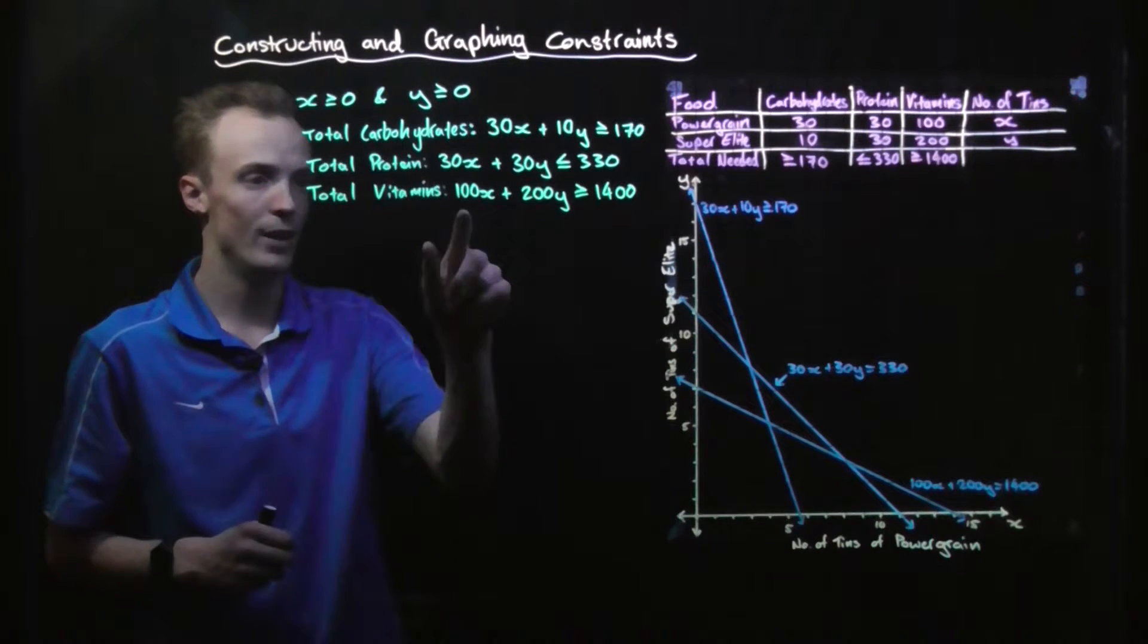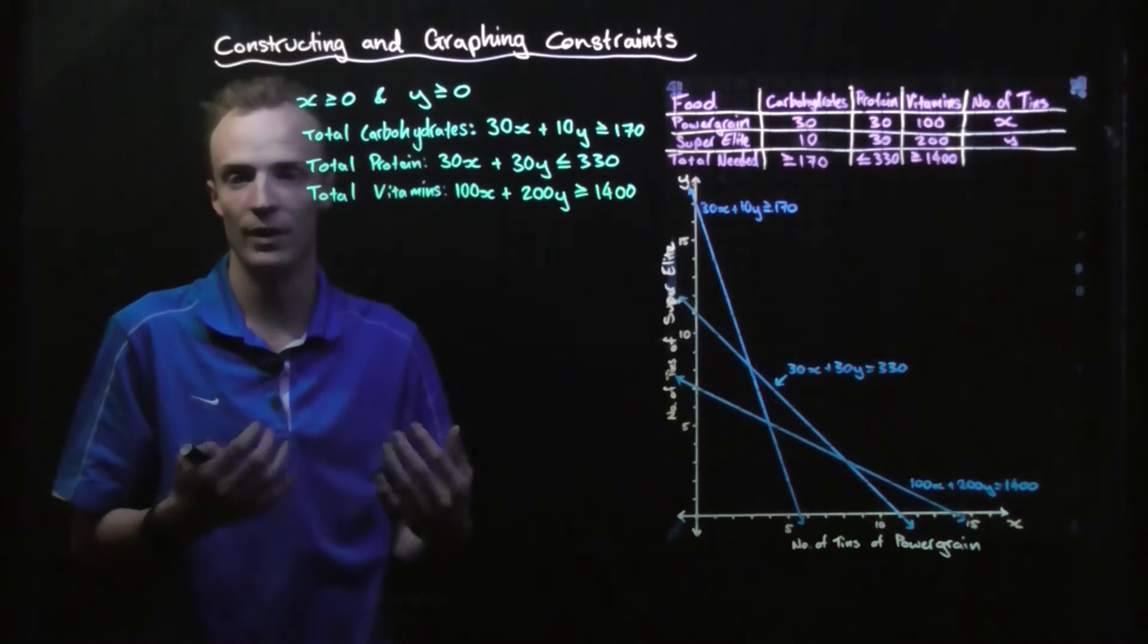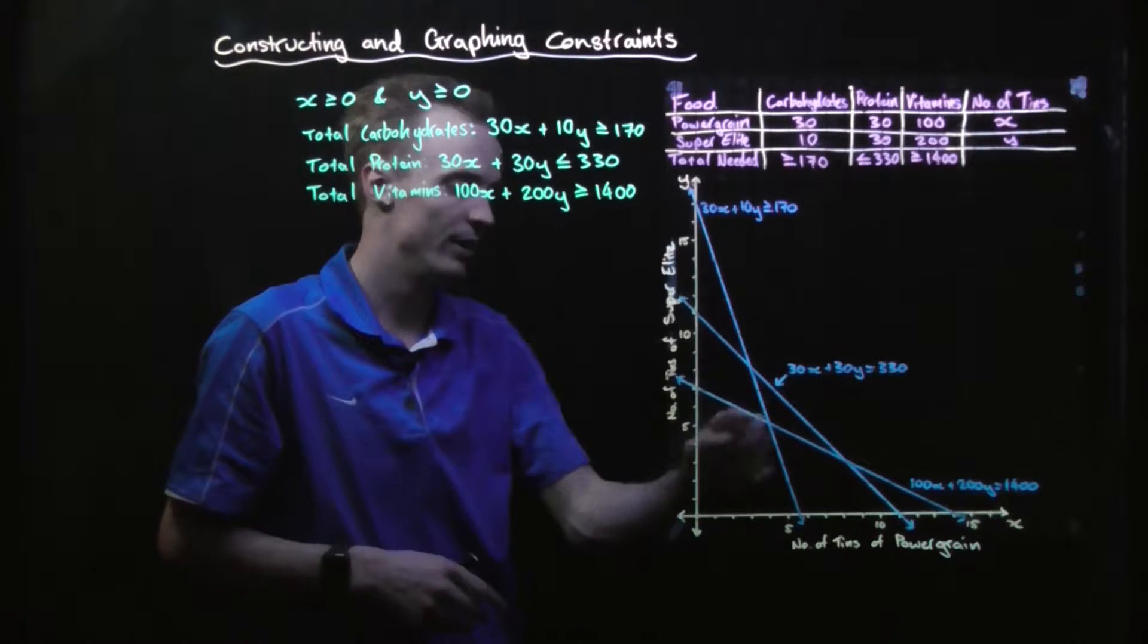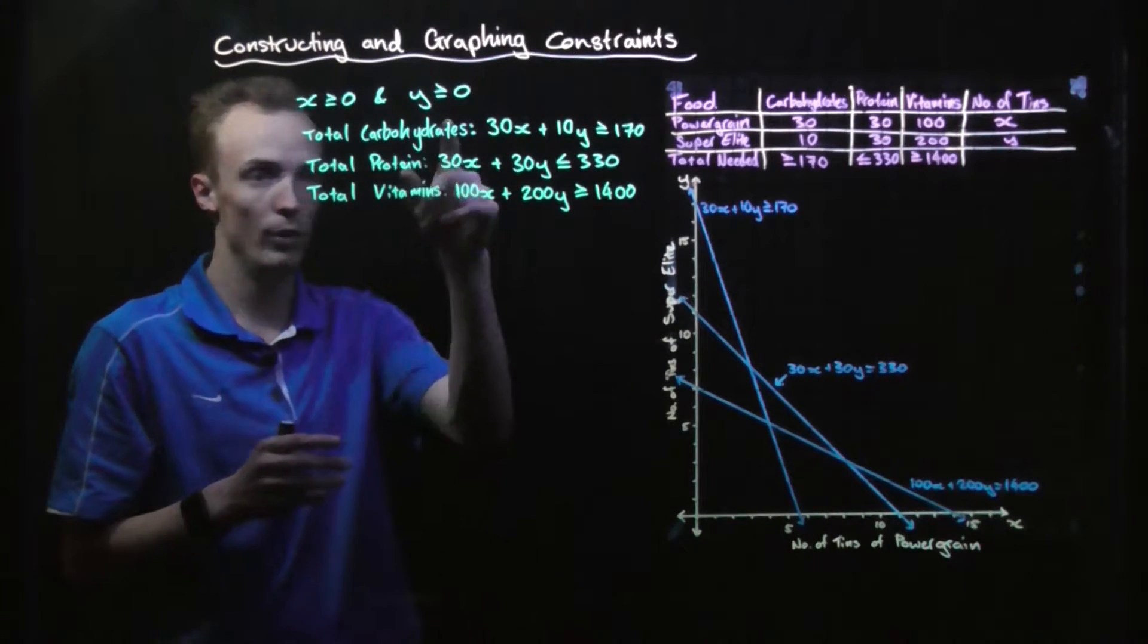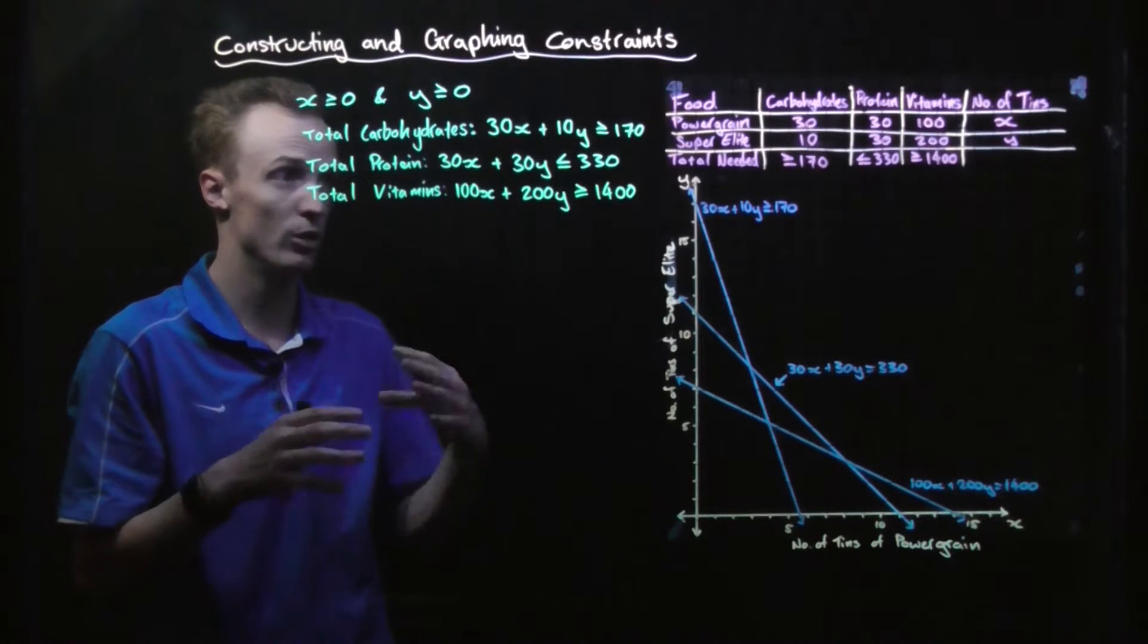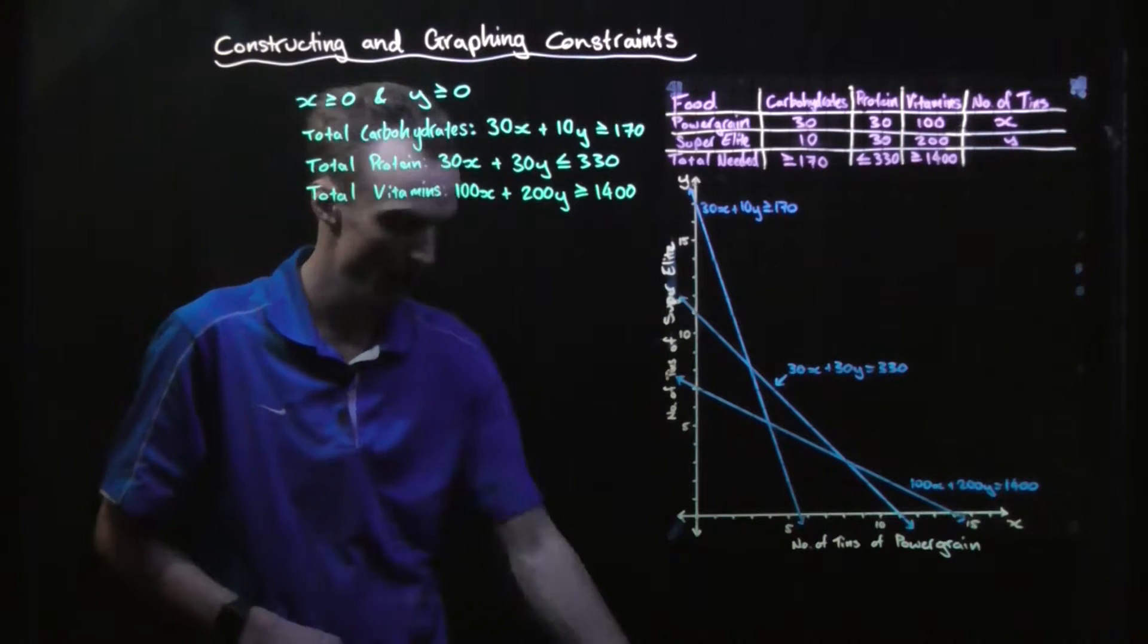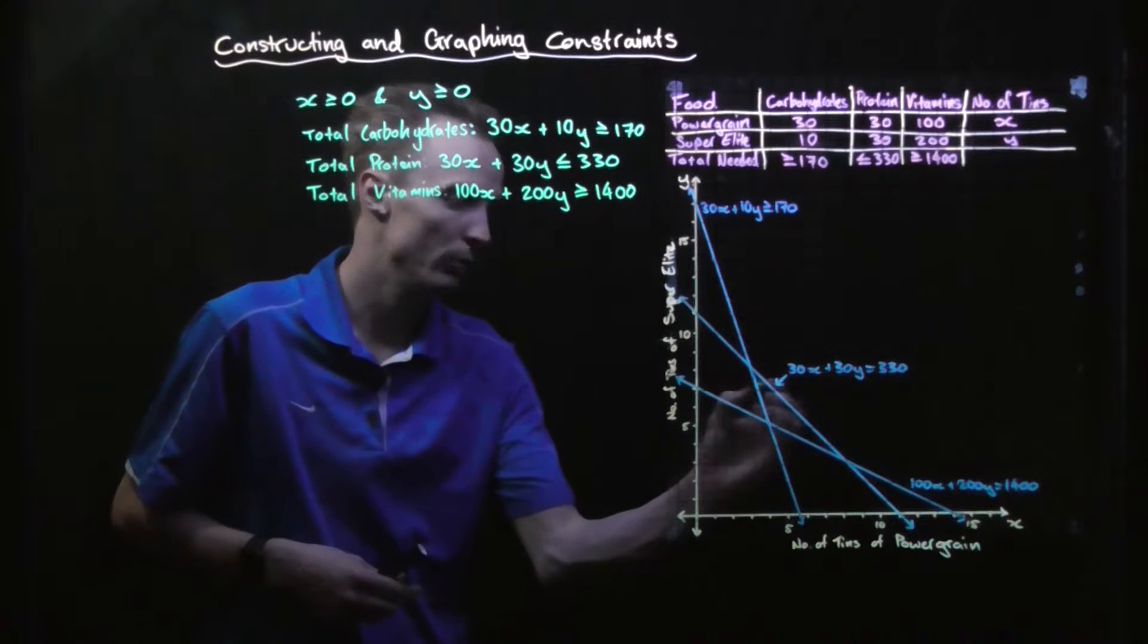Finally we look at vitamins. The vitamins line is represented here and it's going to be greater than this line, so that means it has to be this side of the vitamins line. Now the only space that meets all the other restrictions or constraints as well as this vitamin constraint is this area in here. And we refer to this area as our feasible region.